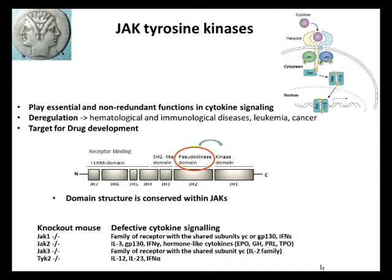Notably, all these drugs as well as 11 other molecules in development target the tyrosine kinase JH1 domain. The domain structure in JAK kinases is very well conserved and they have a typical tandem kinase architecture, with a C-terminal kinase domain consisting of a typical tyrosine kinase domain.